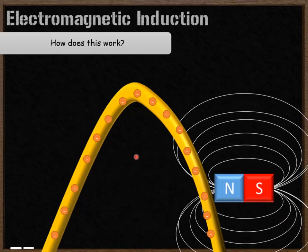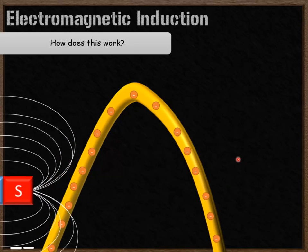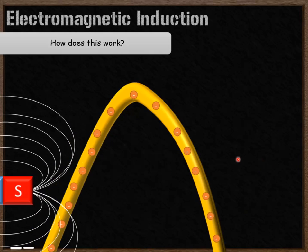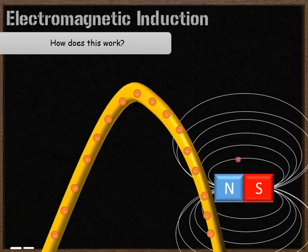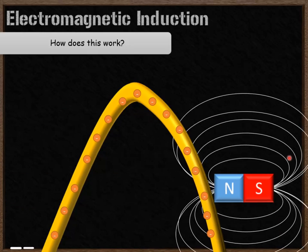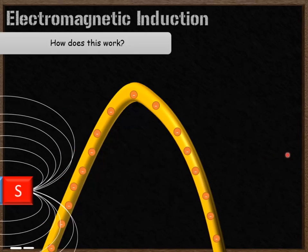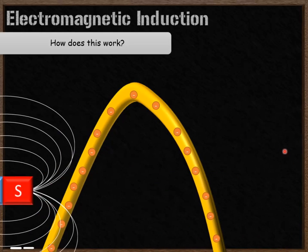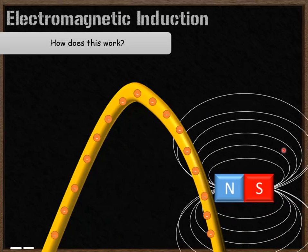As the magnet returns in the opposite direction, the magnetic field pushes the electrons backwards, so they move the other way. You get this process of electrons moving backwards and forwards, backwards and forwards again. That's what's known as an alternating current.